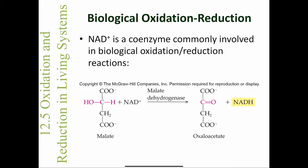We see NAD+ in action in the final reaction of the citric acid cycle, an energy harvesting pathway essential to life. In this reaction, catalyzed by the enzyme malate dehydrogenase, malate is oxidized to produce oxaloacetate. You can see how malate is oxidized by the loss of two hydrogens and the formation of a double bond between the carbon and oxygen. You can also see how NAD+ is reduced by the addition of hydrogen to form NADH.